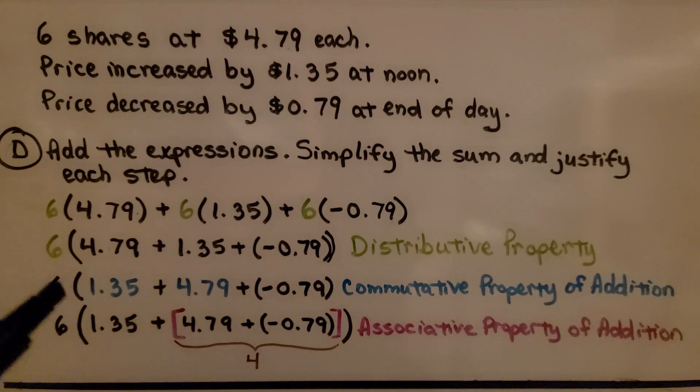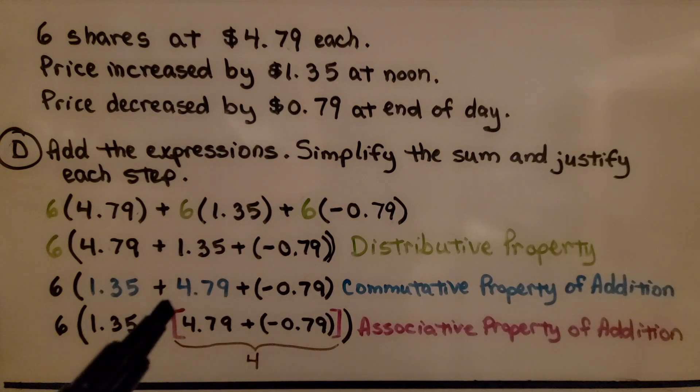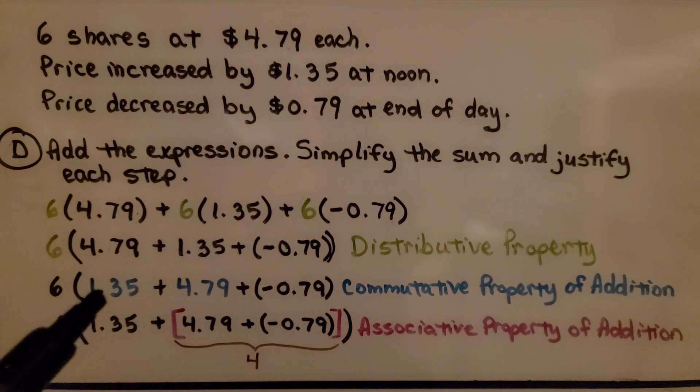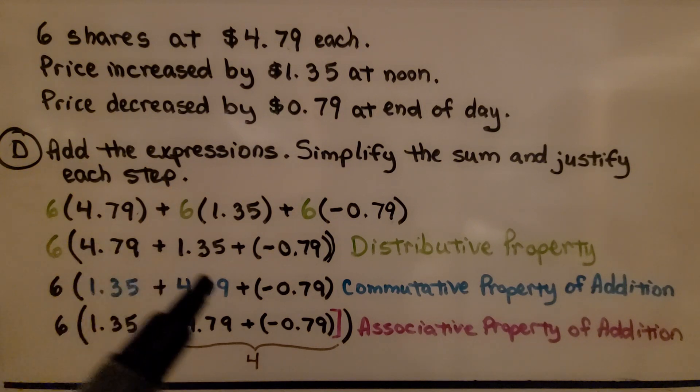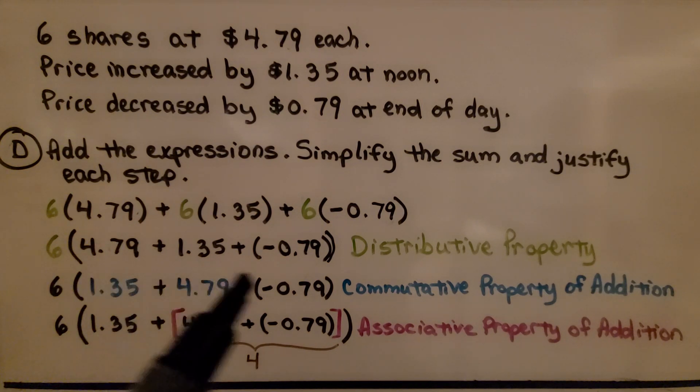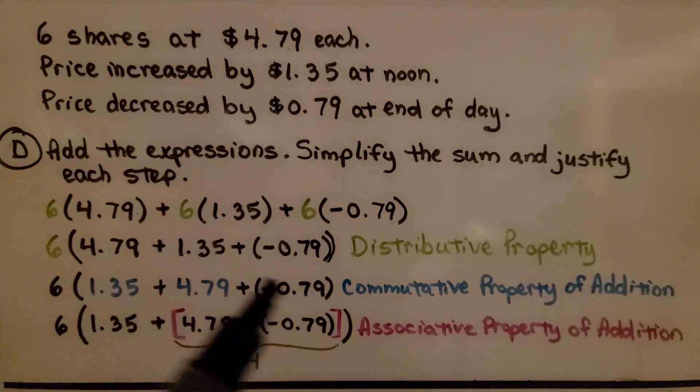We can also change their order with the commutative property of addition, and we can put this $1.35 over here, and this $4.79 over here, and now we have these two next to each other. We change the order with the commutative property.